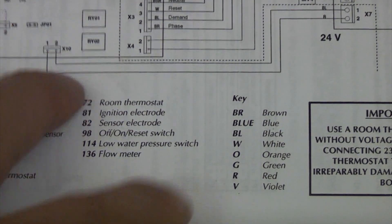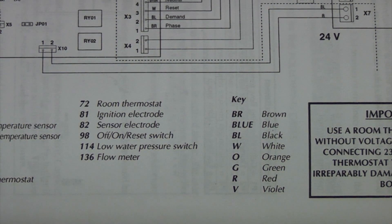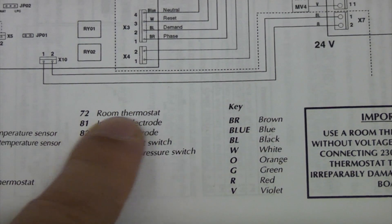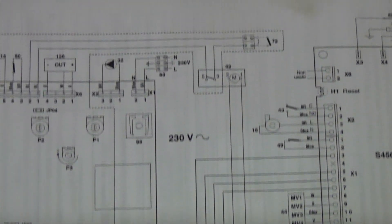So this is the actual manual that came with the boiler now, and of course we are wiring up a room thermostat. So we need to look on there, and we can see that a room thermostat is number 72 on the diagram above. So I will just zoom into that now.